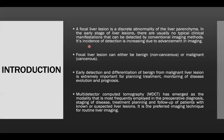Introduction. A focal liver lesion is a discrete abnormality of the liver parenchyma. In the early stage of liver lesion, there are usually no typical clinical manifestations that can be detected by conventional imaging methods. Its incidence of detection is increasing due to advancement in imaging. Focal liver lesion can either be benign or malignant.